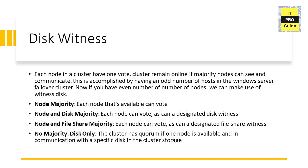Each node in the cluster has 1 vote. The cluster remains online if majority nodes can see and communicate — this is accomplished by having an odd number of hosts in the Windows Server Failover Cluster. If you have an even number of nodes, you can make use of a witness disk. Let us see some of the options provided by Microsoft for quorum configuration.